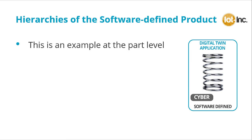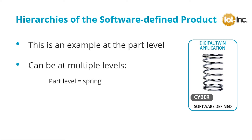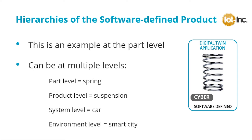This is an example of a software-defined product at the part level, but it can be simulated at different levels. At the part level is the spring; at the product level we would define a software-defined suspension; at the system level, a software-defined car; and at the environment level, a smart city in which the software-defined car could operate.